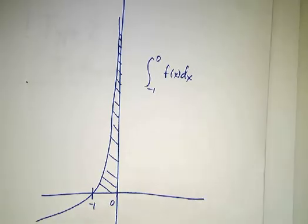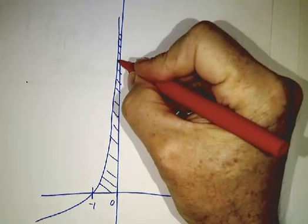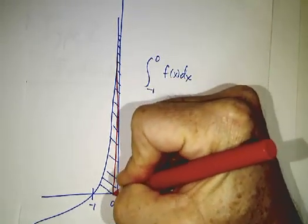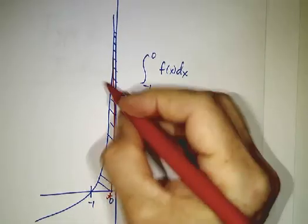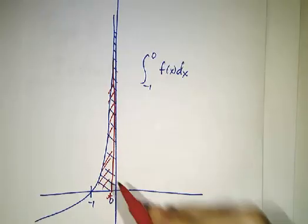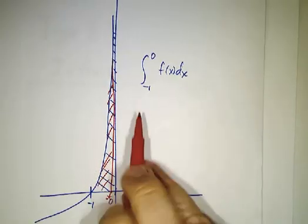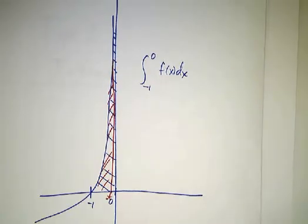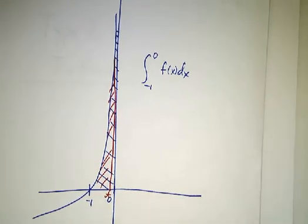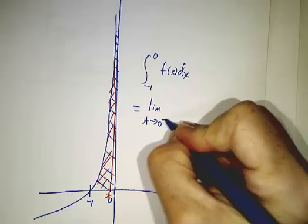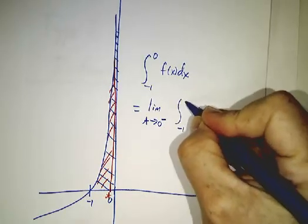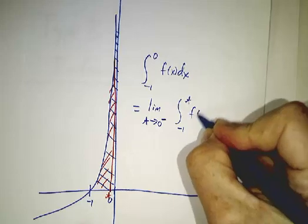And the way we get that is we say, you know what? We can't integrate all the way to 0. So we're going to integrate to a point really close to 0. We're going to go from negative 1 to t and get this area. And then we're going to push the barrier closer and closer and closer and closer to 0. So this integral is defined to be the limit as t approaches 0 from below of the integral from negative 1 to t of f dx.